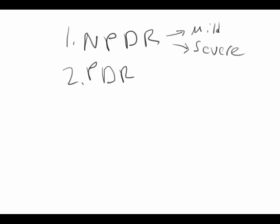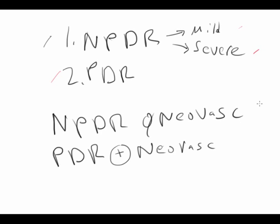There are two different types of diabetic retinopathy: non-proliferative and proliferative diabetic retinopathy. The difference is that in non-proliferative diabetic retinopathy there's no neovascularization, whereas in proliferative diabetic retinopathy there is neovascularization. Neovascularization is the formation of new blood vessels and is mediated by VEGF. Due to the leaky blood vessels and lack of perfusion to the peripheral retina, VEGF is created in the retina.